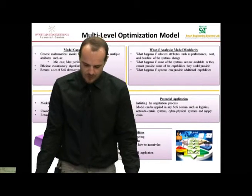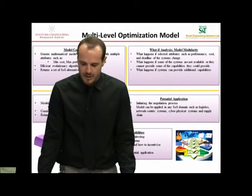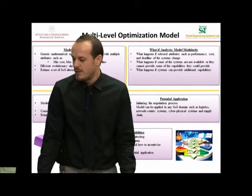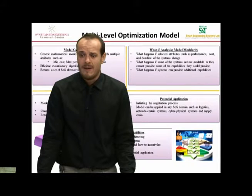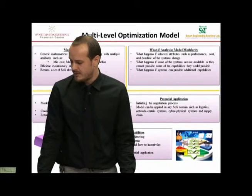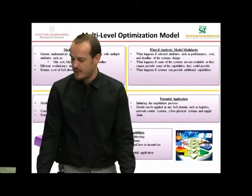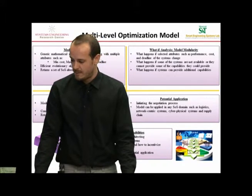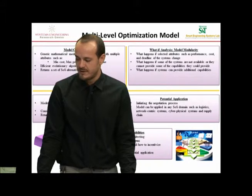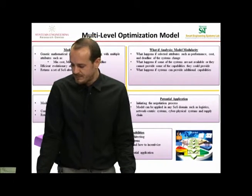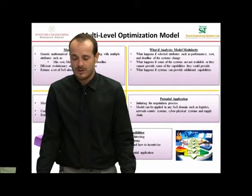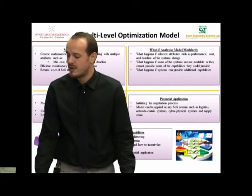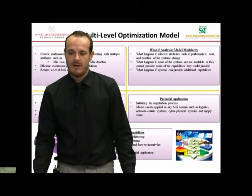The potential application of this model — for this project — is before we start the negotiation process with the systems. This model will suggest the SOS architect some architectures that, when negotiated, will result in good performances. Also, the model can be applied in any SOS domain such as logistics, supply chain, network-centric systems, and cyber-physical systems. Possible future capabilities include modeling the negotiation within SOS architecture generation, so we can include the negotiation process within this model and try to generate meta-architectures.